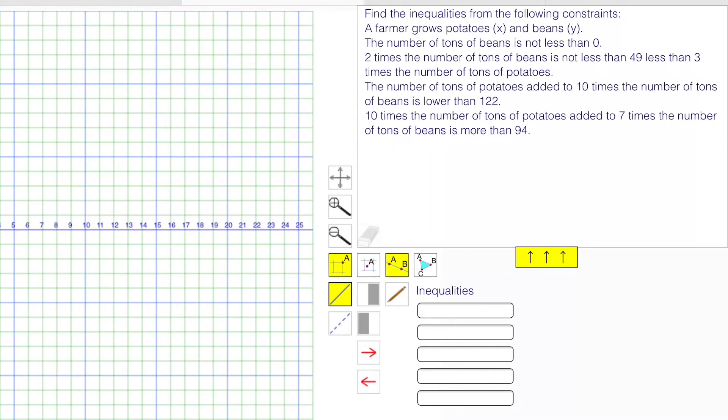Here's a level 9 type question. Find the inequalities from the following constraints. A farmer grows potatoes, which are x, and beans, y.